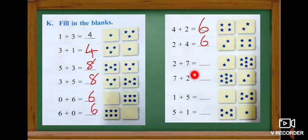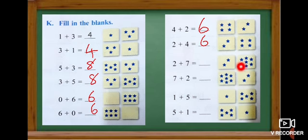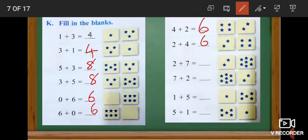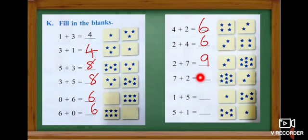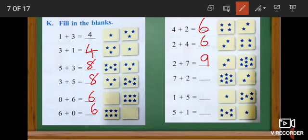Two plus seven. Shall we add it? One, two, three, four, five, six, seven, eight, nine. When we add two plus seven, we get number nine. And look at the next one — here they change the order, they write seven first and then number two. Seven plus two. The order only changes, the answer will be the same. The answer is nine.